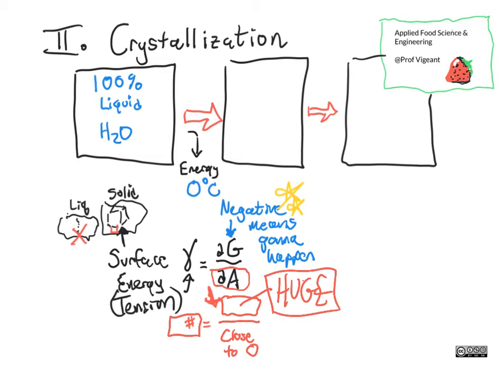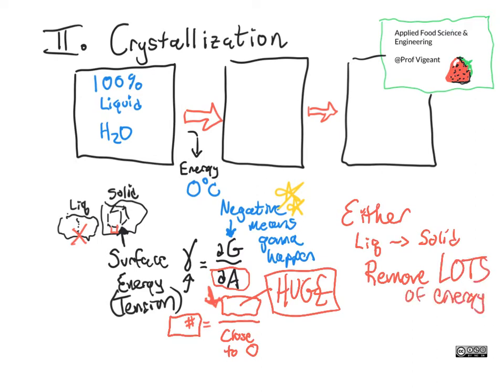So practically speaking, what does that mean? Well, it means one of two things. Either the delta H of fusion, to go from liquid to solid, that first little step, we either must remove lots of energy. So it's not even merely the delta H of fusion, it's much more than that actually that we have to remove. Or you have to get out of this problem entirely by introducing a nucleation site.